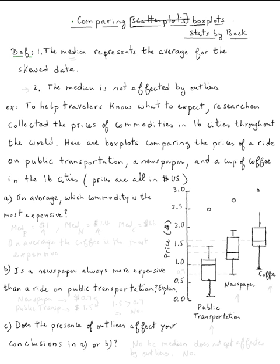So let's do this example. To help travelers know what to expect, researchers collected the prices of commodities in sixteen cities throughout the world. Here are plots comparing the prices of a ride on public transportation, a newspaper, and a cup of coffee in the sixteen cities. The prices are all in U.S. dollars. So here's the public transportation, this is the plot for the newspaper, and this is the one for the coffee.